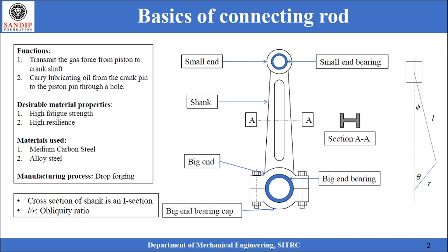The shank of a connecting rod is made up of an I-section. The reason for using an I-section is that it is excellent when it comes to tackling buckling and bending stresses. The I-section has the highest section modulus — that is, the ratio of area moment of inertia to the distance of the farthest fiber from the neutral axis — and that is why wherever higher bending stresses are experienced, I-sections are used.